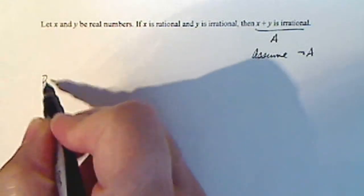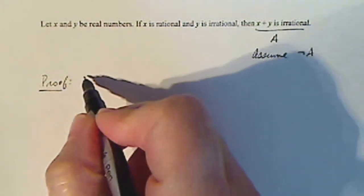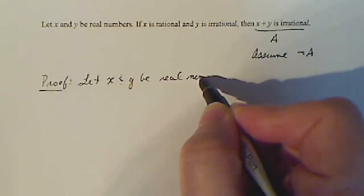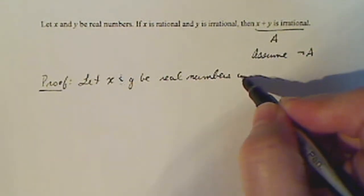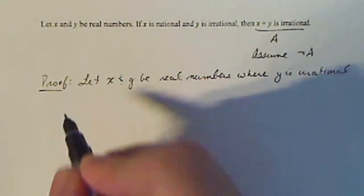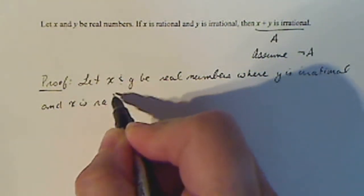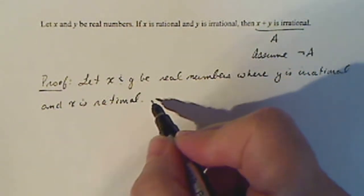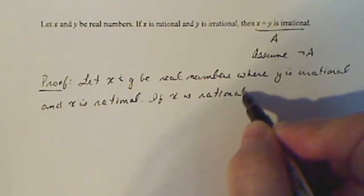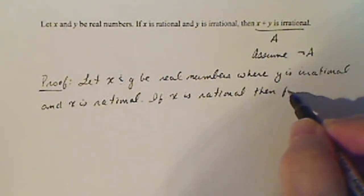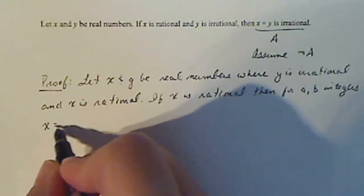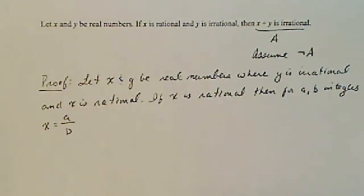So here's the start of our proof. First of all, let X and Y be real numbers where Y is irrational and X is rational. So let's talk about what it means for X to be rational. If X is rational by definition, then for some A and B integers, X equals A over B. So that's what it means for X to be rational.